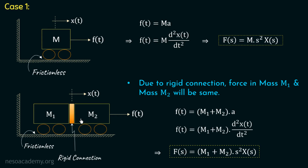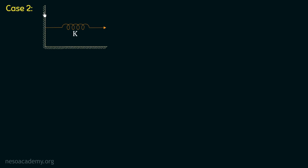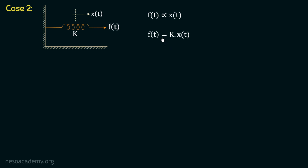But what will happen if the connection between these two systems is not a rigid connection? Let's understand this in case number 2. Consider a spring having spring constant k attached to a fixed support from one side; on the other side we apply a force f of t to stretch the spring. The spring will try to regain its original position by applying an opposing force, which is directly proportional to the displacement. So f of t equal to k multiplied with x of t, and applying Laplace transform gives f of s equal to k multiplied with x of s.